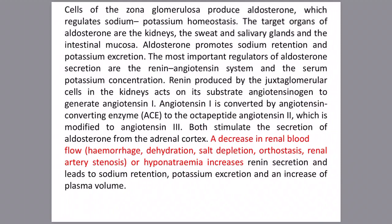The cells of the zona glomerulosa, part of the adrenal cortex, produce aldosterone, which regulates sodium and potassium homeostasis. The target organs of aldosterone are the renal tubules, sweat glands, salivary glands, and intestinal mucosa. Aldosterone promotes sodium retention and potassium secretion.